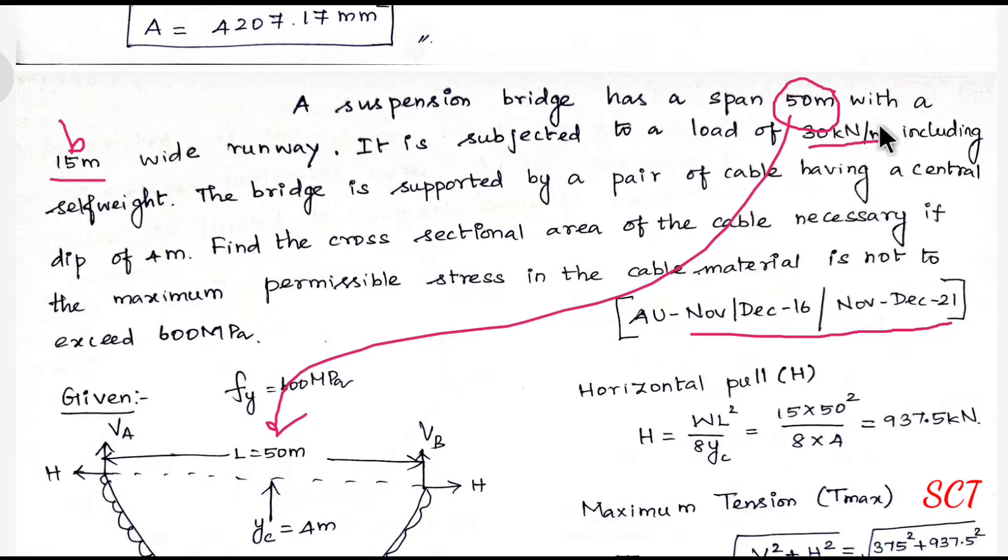The load is 30 kilonewtons per meter, which is a UDL uniformly distributed load. In this condition, we need to multiply appropriately. If it's in meter square, we should adjust accordingly, including self-weight.